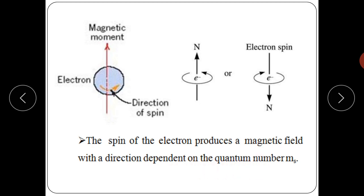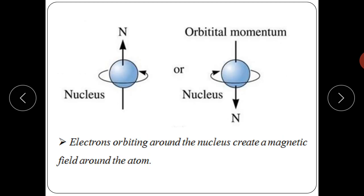The nucleus contributes an orbital moment. Electrons orbiting around the nucleus in clockwise or anti-clockwise directions create a magnetic field of the atom. Thank you students.